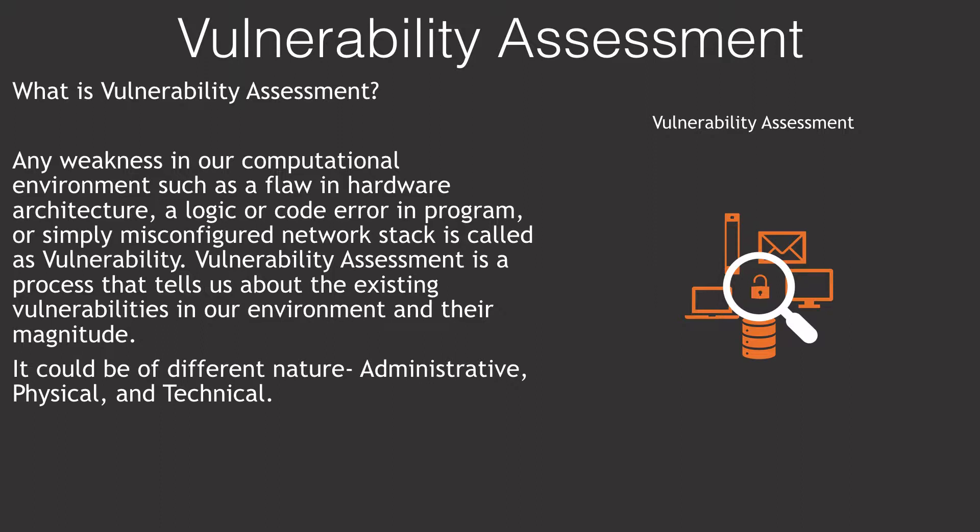Vulnerability assessment could be of different types such as administrative, physical, or technical. A review on organizational policies, its standards and guidelines to figure out a loophole would fall in the administrative vulnerability assessment. Assessing the weakness in physical environments such as the building structure and entrance, or simply lighting conditions on the campus, will be considered as physical assessment.